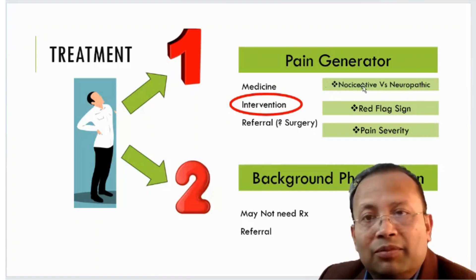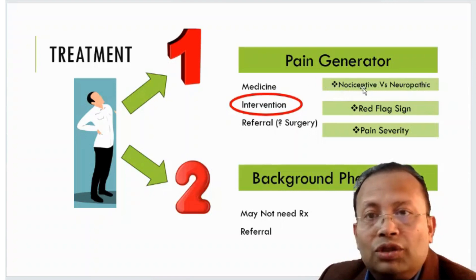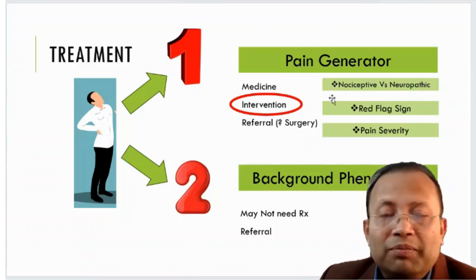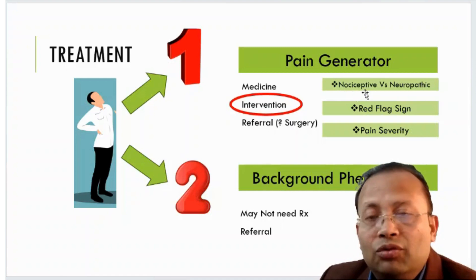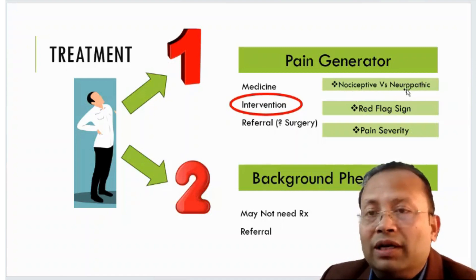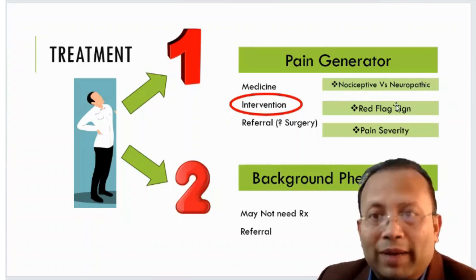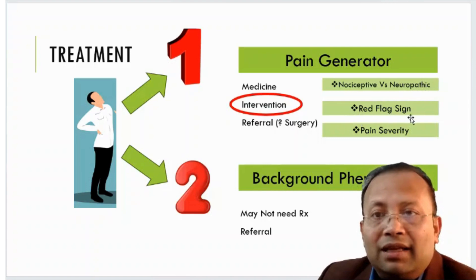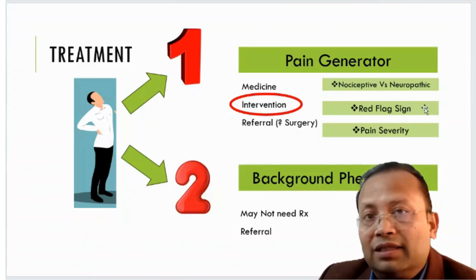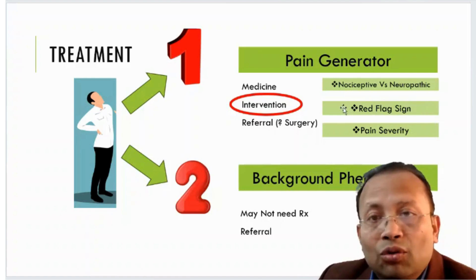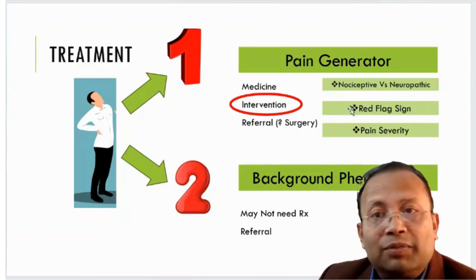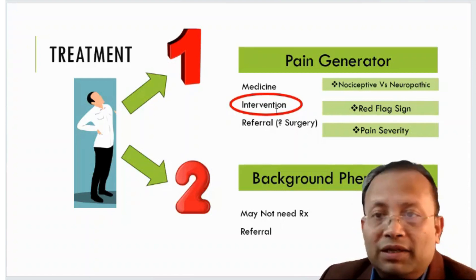When a patient presents, we consider whether they have nociceptive pain or neuropathic pain. Nociceptive pain is a physiological pain — it is a good pain necessary for living. Neuropathic pain is pathological; it is a different type of pain with no beneficial aspect. We also assess red flag signs such as motor paralysis, infection, malignancy, or fracture. If a red flag sign is present, we refer the patient to the respective specialist.